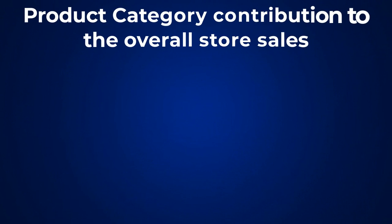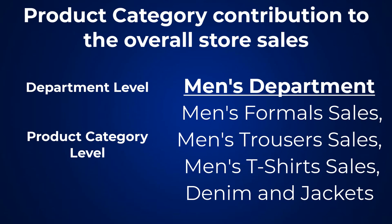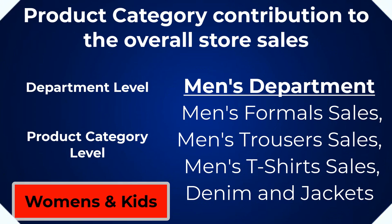The sixth report is the sales by category report. This report helps us understand how much a particular product category contributes to the overall store sales. It can be generated at the department level as well as the product category level. For example, you can generate reports for the men's department as a whole, as well as for men's formal sales, men's trousers, t-shirts, denim, and jackets. Similarly, it can be done for women's wear and kids' wear categories.